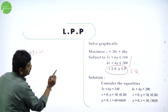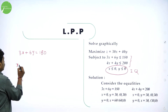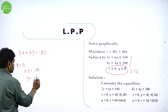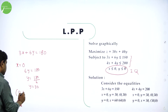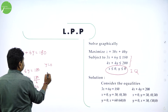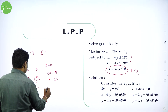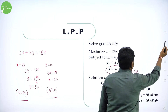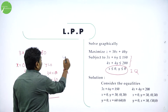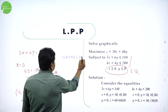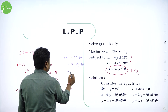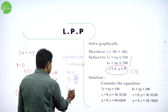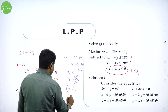For line 1: 3X + 6Y = 180. Put X = 0: Y = 180/6 = 30, giving point (0, 30). Put Y = 0: X = 180/3 = 60, giving point (60, 0). For line 2: 4X + 4Y = 200. Put X = 0: Y = 200/4 = 50, giving point (0, 50). Put Y = 0: X = 50, giving point (50, 0). We now have two points for each line.